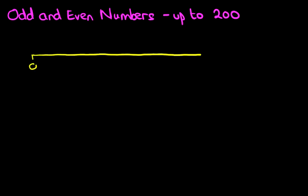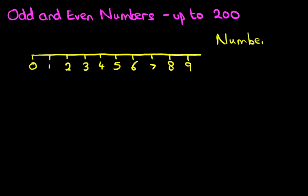Our number line starts at 0, and we're going to keep going: 3, 4, 5, 6, 7, 8, and 9. So that is our number line running from number 0 to 9.